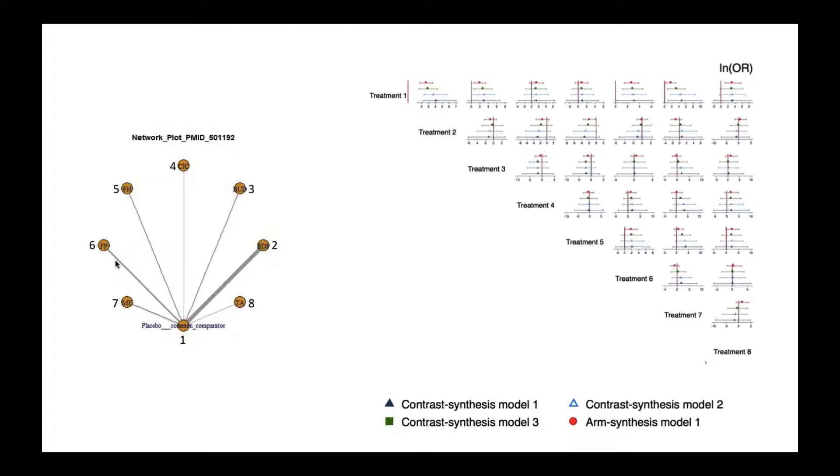We can also look at all of the direct and indirect comparisons. Here we have the estimates for treatment 1 compared to 2, treatment 1 compared to 3, and so on. Those three points that I highlighted in the Bland-Altman plot correspond to the comparisons of treatment 1 to 7, treatment 4 to 7, and treatment 5 to 7. Treatment 1 to 7 is a direct comparison.